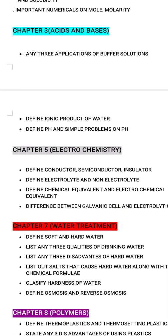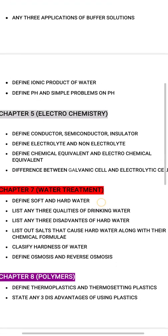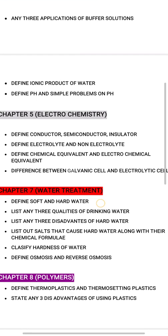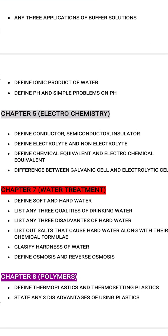Chapter 4 is noted briefly. Chapter 5 is electrochemistry. Key questions include the definition of electrochemical equivalent — very important — and the differences between galvanic and electrolytic cells, which can appear as either an 8-mark or 3-mark question.